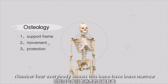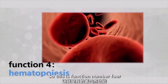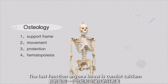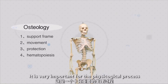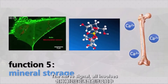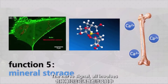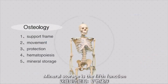Number four — inside the sponge substance we have bone marrow. So bone marrow produces the blood cells. This is function four. Then the last function: the bone contains calcium, so that's what we call mineral storage. The calcium is very important for our physiological processes — for example, the nerve impulse, and our circulatory processes and signal pathways are all involved with calcium. That's mineral storage.